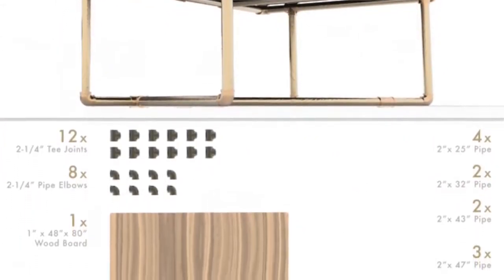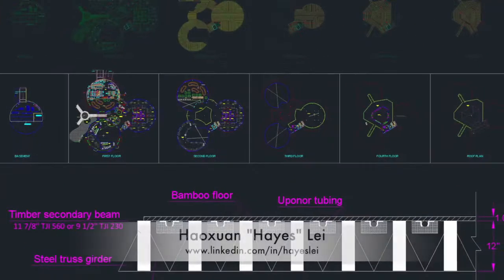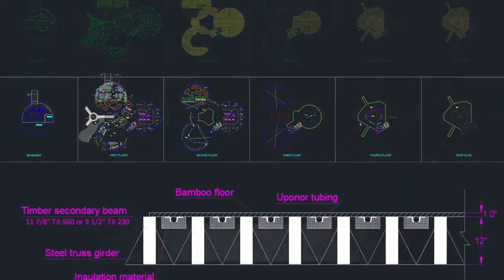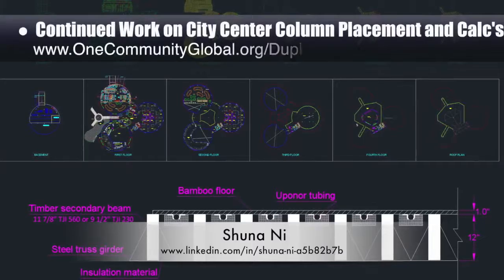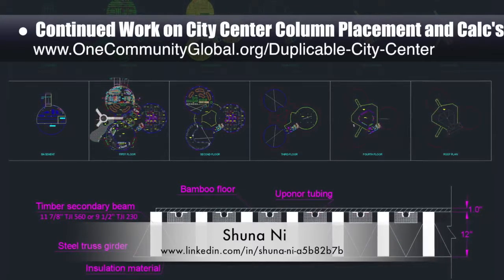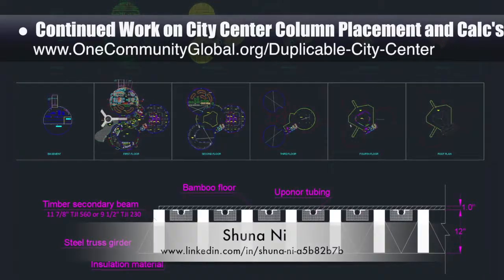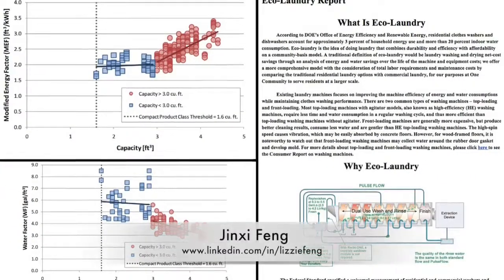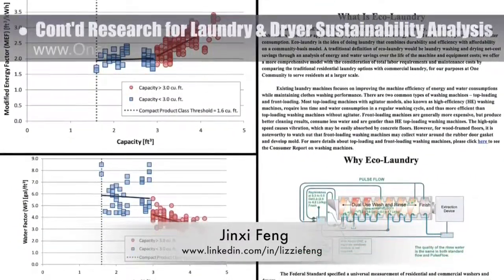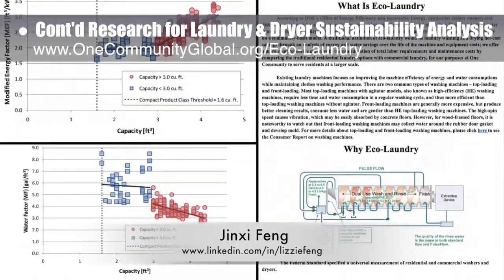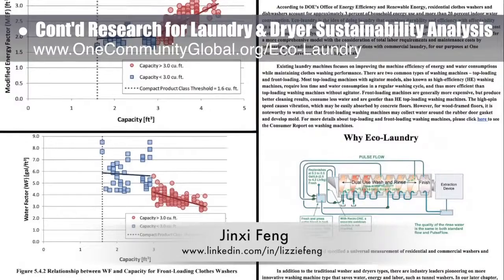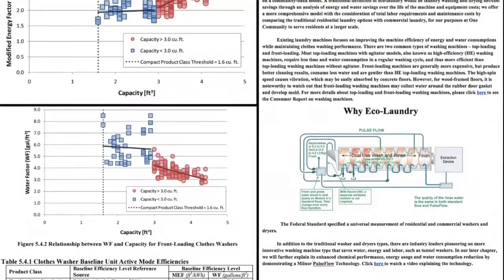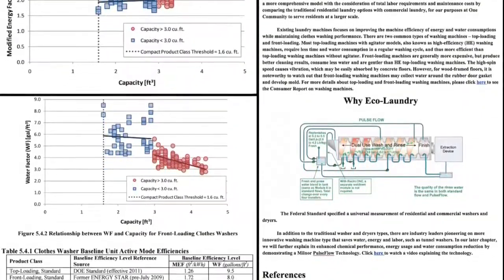What you see here are the results of a full year of volunteering with us. Hase Lay, structural engineer, and Xu Nani, masters of mechanical engineering and civil engineering PhD, also continued their work on the city center column placement and calculations. This week's work focused on another round of review and revisions for column placement and further detailing the floor construction details. Xin Xifeng, environmental consultant, also continued her research helping us to create an in-depth laundry and dryer machine sustainability analysis — her ninth week of behind-the-scenes research. This week's focus was continuing with model calculations and research and beginning the process of writing the tutorial for this component.